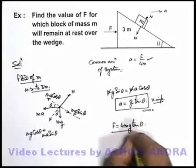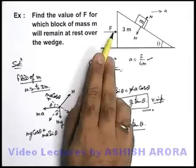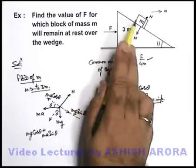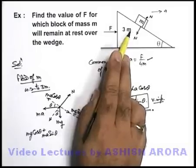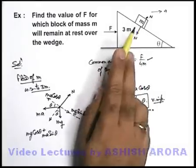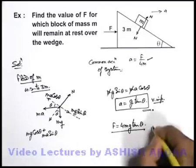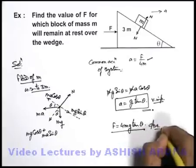That means this is the force required to be applied on this block in such a way that this small m will not slide over the surface of 3m, or we can say m will remain at rest with respect to 3m if the applied force is 4mg tan theta. So this will be the answer to this problem.